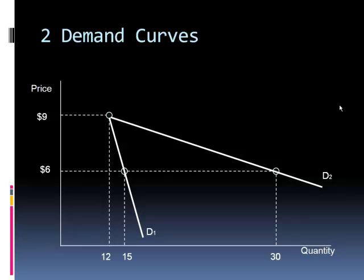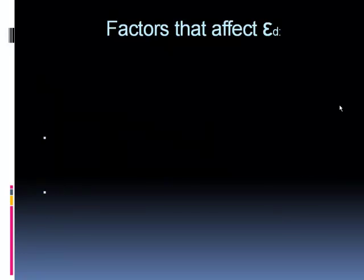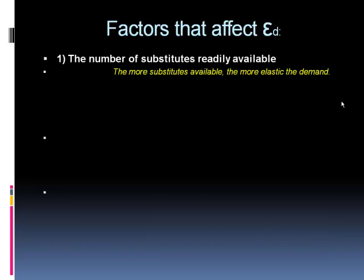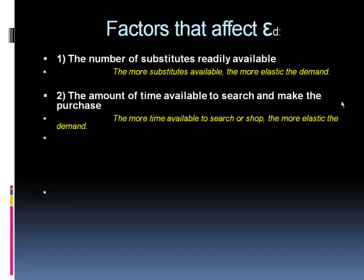So these are two curves with different elasticities — that's the idea of where we're going with this. D2 is an elastic curve and D1 is a more inelastic curve. What makes a demand curve more or less elastic? There are four factors. First: the number of substitutes you can find. If you have a lot of substitutes, a small price change makes you go buy something else — more substitutes means more elastic demand.